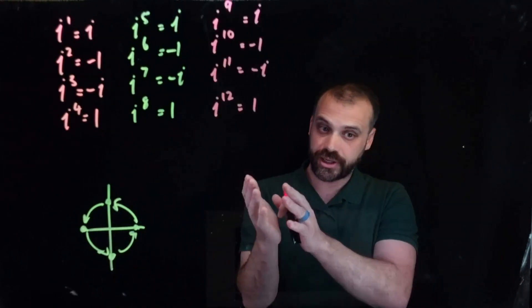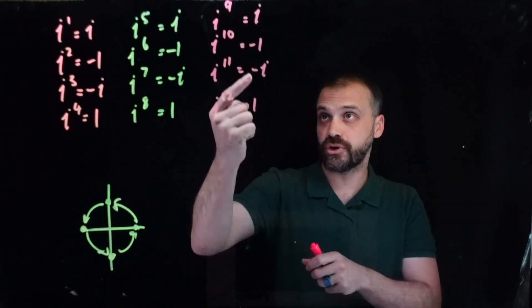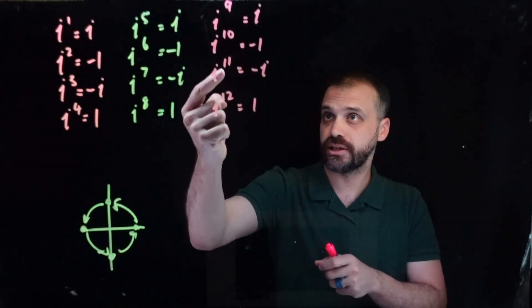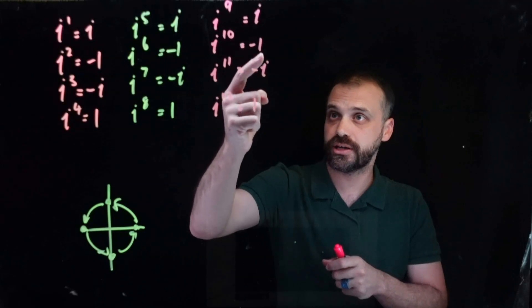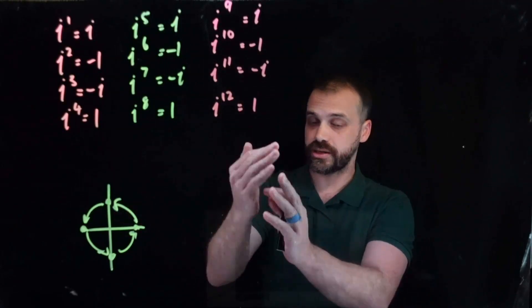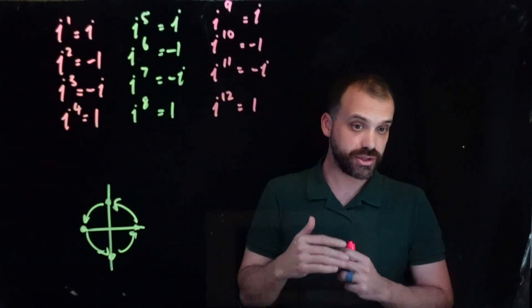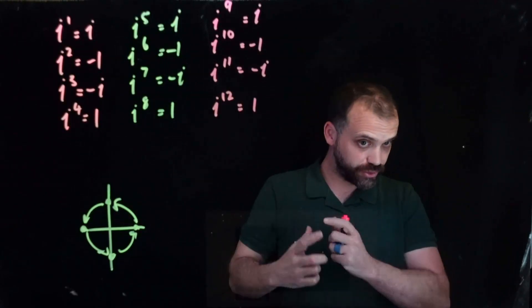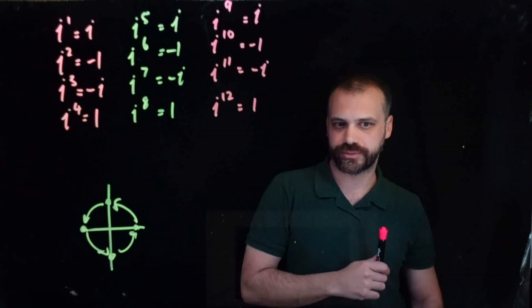And funnily enough, this works as well for i to the 9, 10, 11, and 12 — again: i, negative 1, negative i, and 1. So they happen in groups of 4.